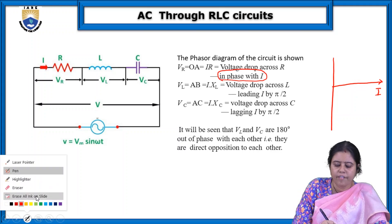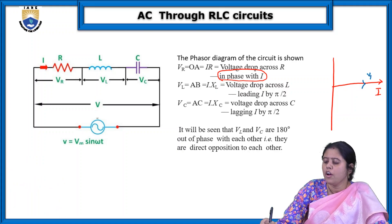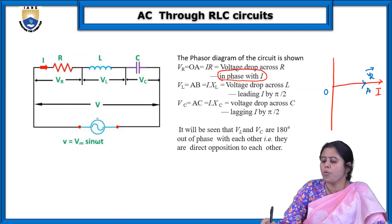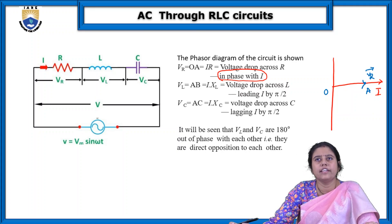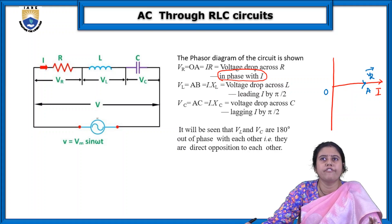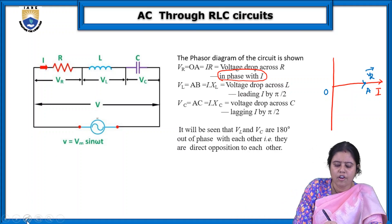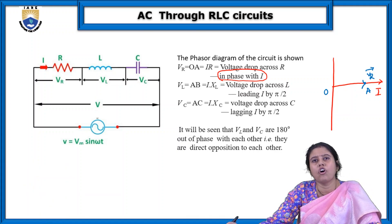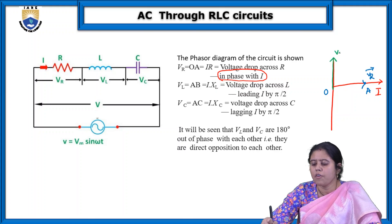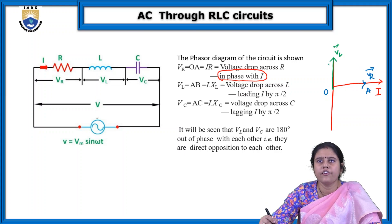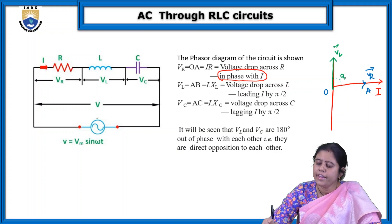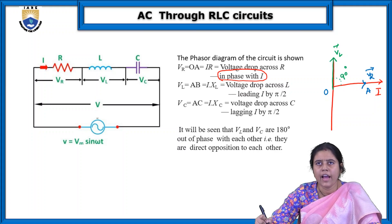Vr will always be in the same phase as the current. We write it as Oa. Oa is the voltage drop across the resistance, always in phase with the current. We take I as the base since current is constant throughout the circuit. VL is the voltage drop across the inductor. The voltage across the inductor always leads the current — leading by 90 degrees. So VL = IXL, shown as a green line at 90 degrees.